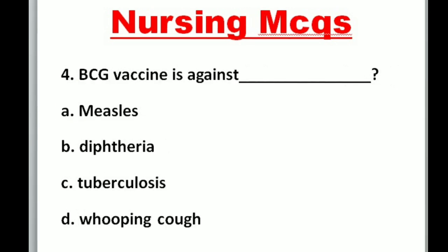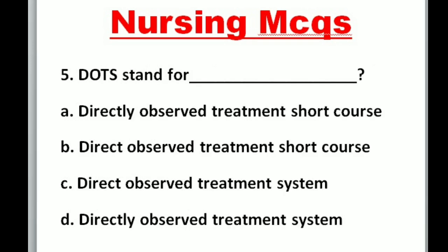Question 4: BCG vaccine is against — A. Measles, B. Diphtheria, C. Tuberculosis, D. Whooping cough. Correct option is C: Tuberculosis.